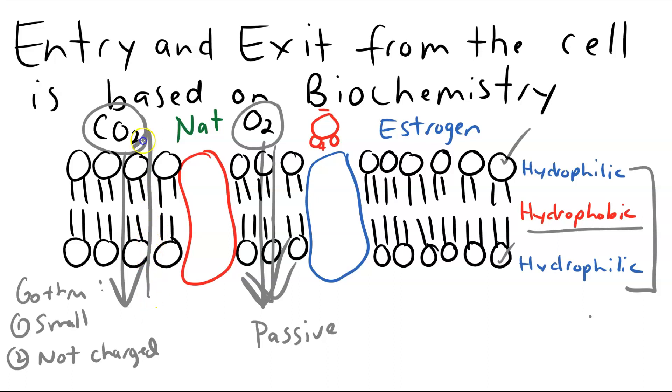And actually I'm going to switch this arrow for CO2 going out because we actually don't want carbon dioxide in our cells. So CO2 would pass out directly through the membrane to the outside of the cell. So small, nonpolar, not charged gases can go directly through the membrane.